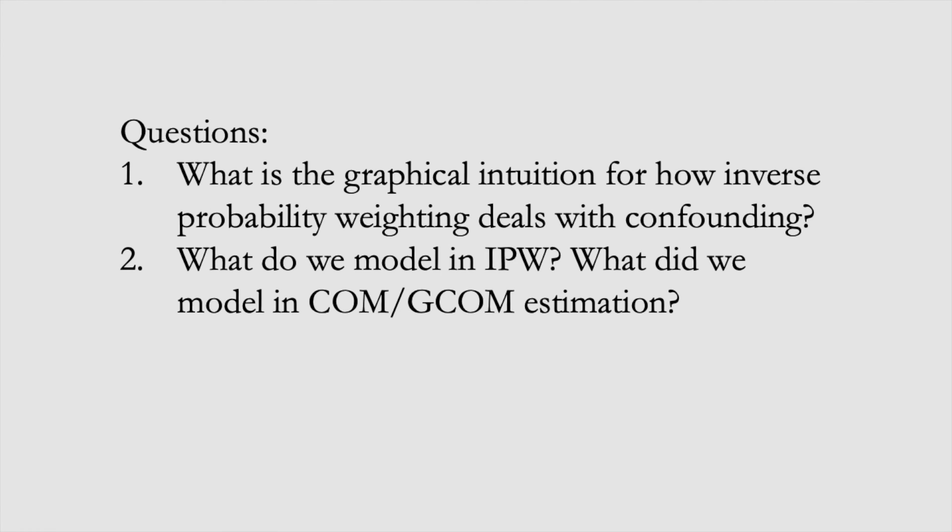Here are two questions for the propensity scores and IPW section. First, what is the graphical intuition for how inverse probability weighting deals with confounding? Second, what do we model in IPW, and compare that to what we model in COM/GCOM estimation?